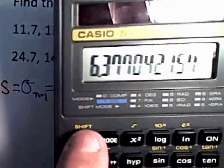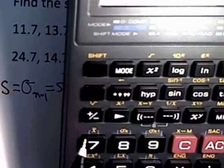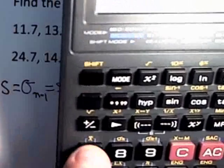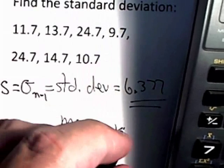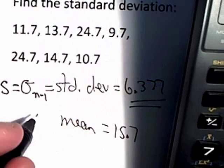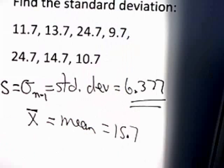I just need to hit the shift key, and then do the x bar. And x bar is above the 7. And that'll give me the mean of 15.7, which the symbol on the calculator is x bar.